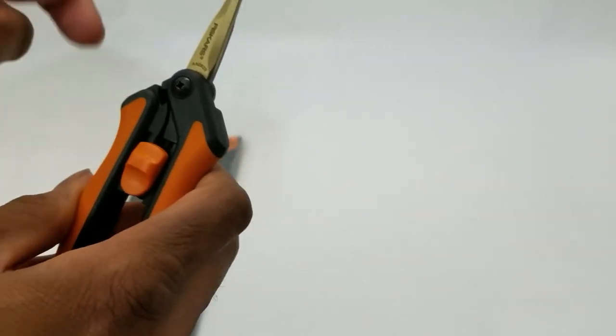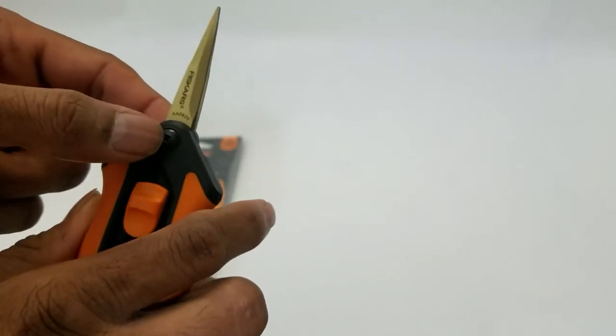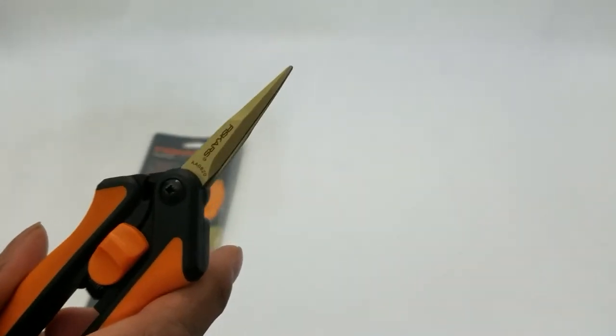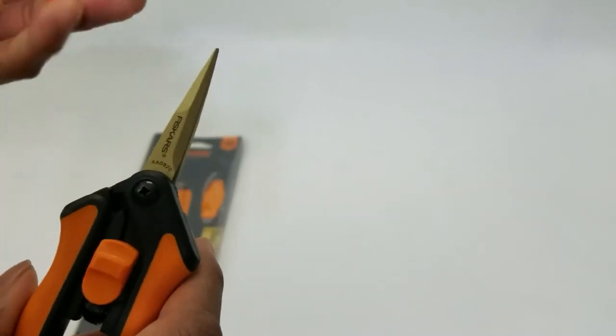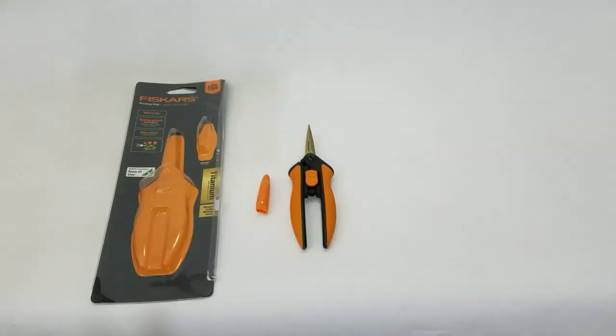It has a screw also, that way if you want, you can tighten it up. Because with age, with time, with heat, in case there is any issue, you can always tighten the screw with a Phillips head screwdriver. To cover it, just use the sheath and cover it.